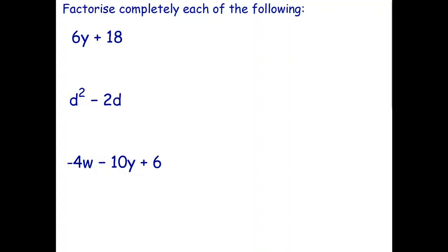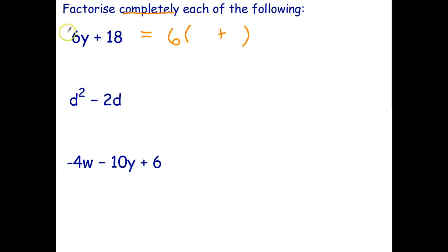Let's factorize these completely. For 6y+18: I could take a factor of 2, but the highest common factor is 6, since 6 is a factor of both 6 and 18. Taking out 6: 6 times what gives 6y? Answer is y. 6 times what gives 18? Answer is 3. So 6y+18 = 6(y+3). Check: 6×y=6y, 6×3=18.